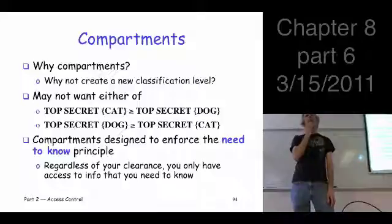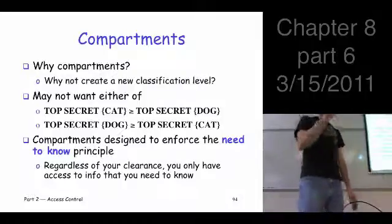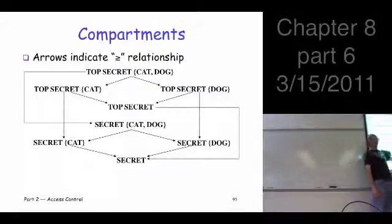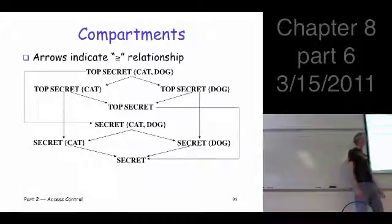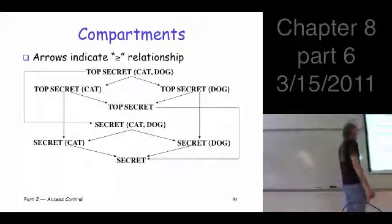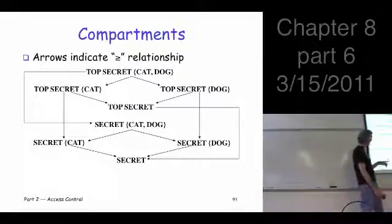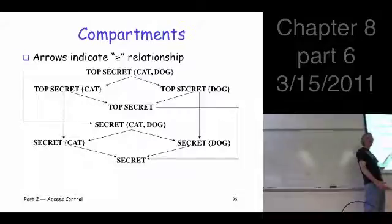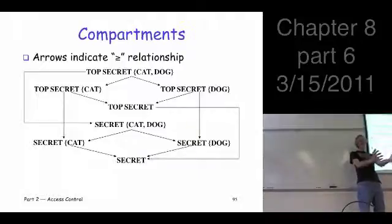Student question: if you had two secret compartments, does it assume that top secret would be able to see them? Suppose you have top secret clearance with both cat and dog — you could see both compartments and everything that's top secret, transitively down to secret and so on. But if you have top secret clearance alone, can you see stuff that's secret cat? The answer is no, because there's no path that gets you there. The compartment cuts across the classification levels — you have to be in that compartment to see anything about it, whether it's top secret, secret, or whatever.